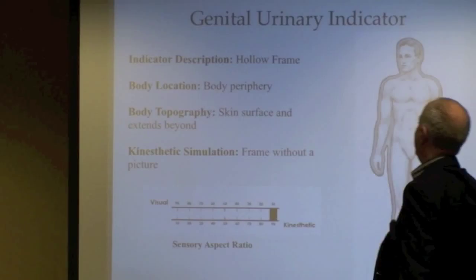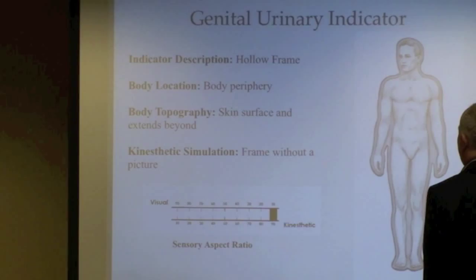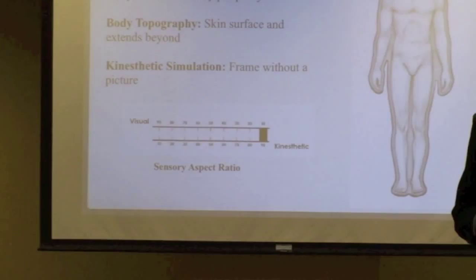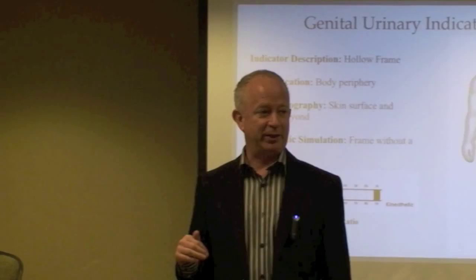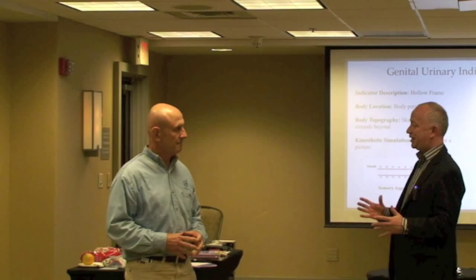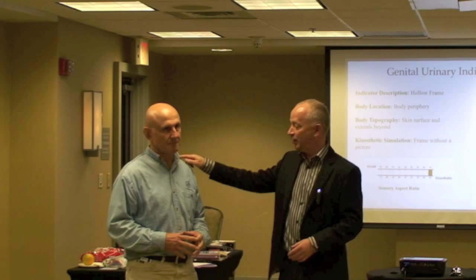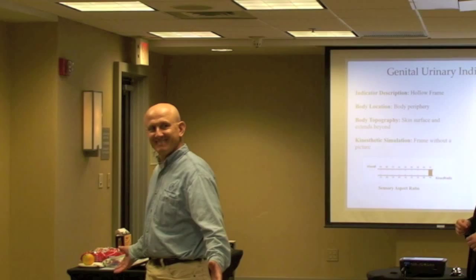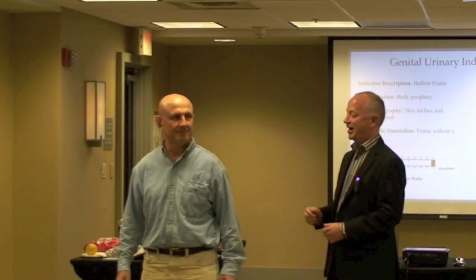If you look here, you'll notice that on our sensory aspect ratio, we are very far down into the feeling component, so you're really not going to see much at all. As I said earlier, the prostate is like a male thyroid organ. My description of it is I perceive a hollow frame around men. It is in the body periphery. I'm asking you to bring your attention to just the outline of his body, and now I'm asking you to begin to perceive off of the body periphery a little bit around him.